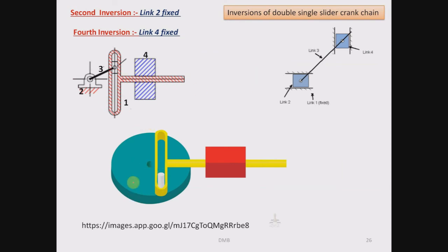So this is a Scotch yoke mechanism. This rotating link is link number 3 which is acting as crank. This white color link is link number 4, which is sliding in vertical direction inside this yellow link which is link number 1. And this yellow link slides inside the fixed guide. So this is Scotch yoke mechanism.